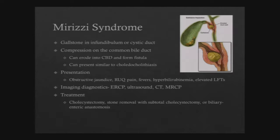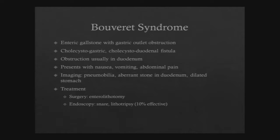Bouveret syndrome is a variation of gallstone ileus where the gallstone causes gastric outlet obstruction, typically via a cholecystoduodenal or cholecystogastric fistula. The stone is usually lodged in the duodenum or prepyloric. Patients present with nausea, vomiting, and abdominal pain. On imaging you see the stone in the duodenum with a very dilated stomach. Surgery is usually an enterotomy with removal of the stone. Endoscopic measures can be used but have limited success rates.